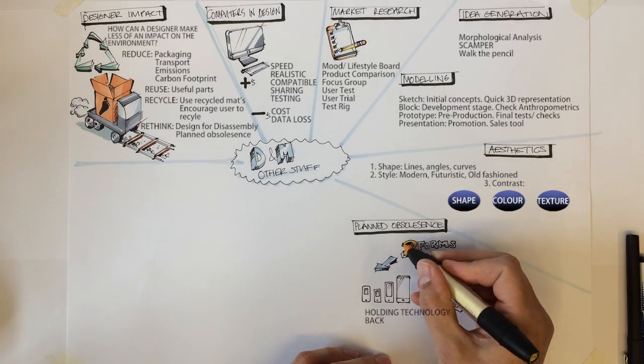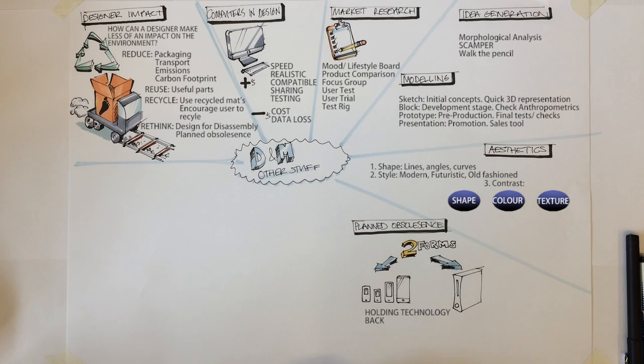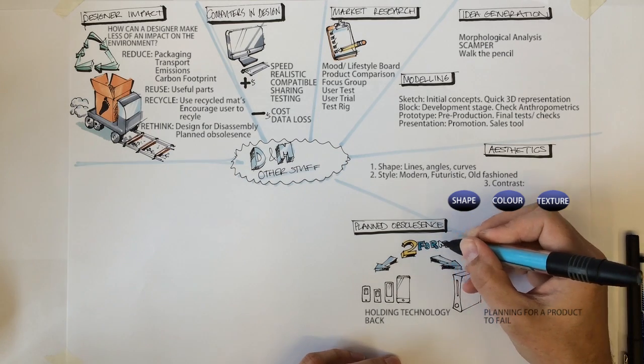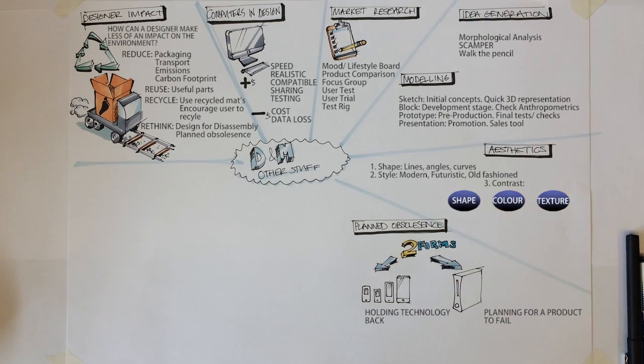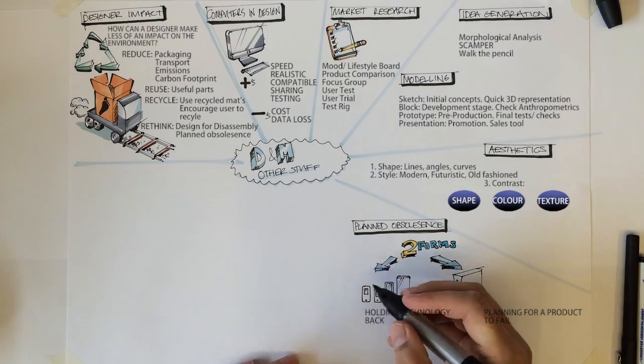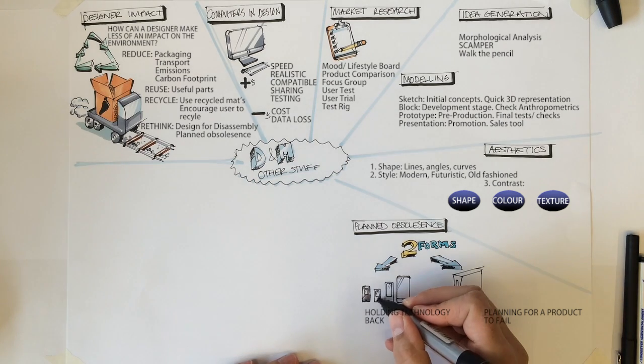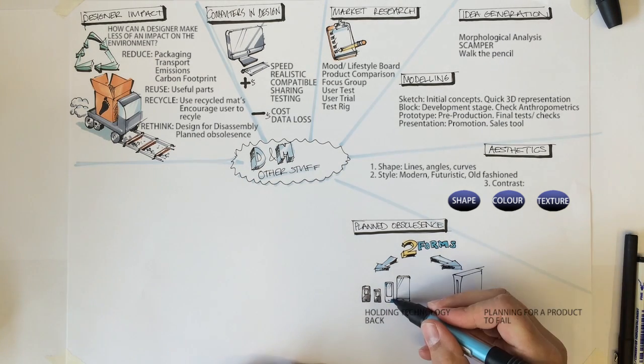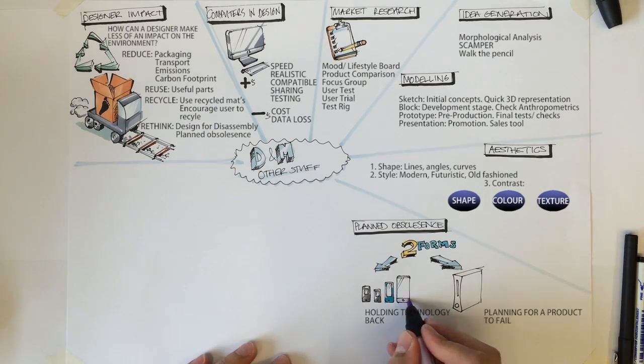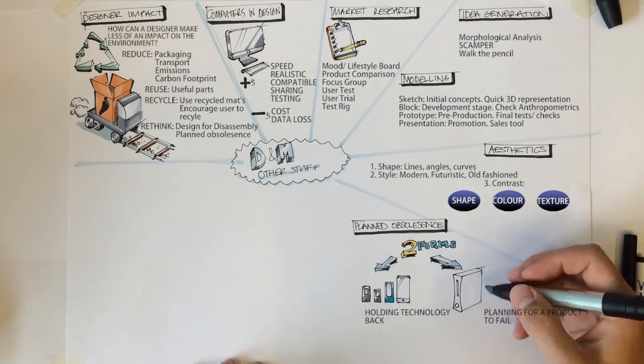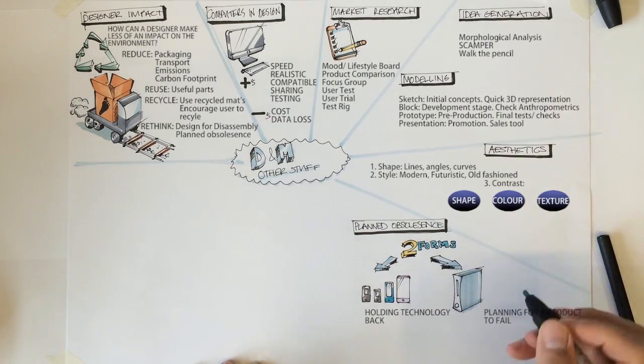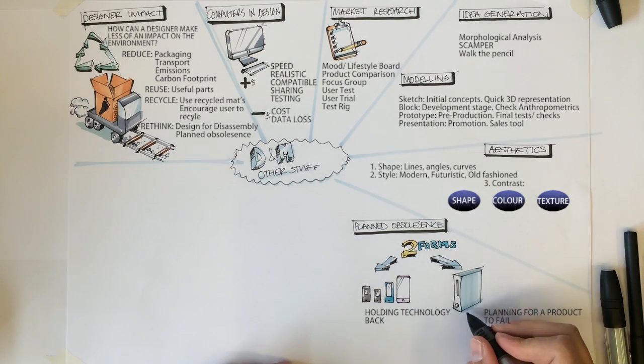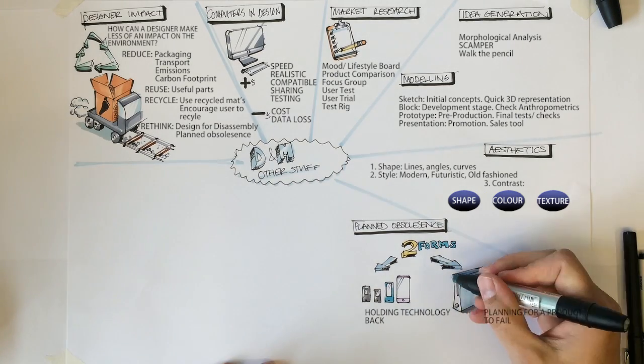The other side of planned obsolescence is planning for the product to fail. This happens less so nowadays. It used to be the case that products were intentionally designed to fail after a certain amount of time. The consumer would be forced to buy a new product, hence driving sales. A balance needs to be struck between making money by selling these products but also ensuring that there is not a consumer backlash as they become annoyed by constant upgrades or the product failing.